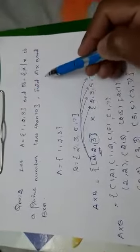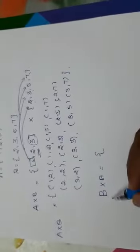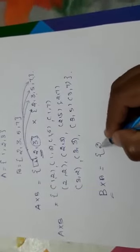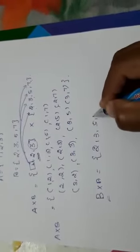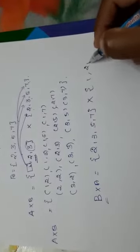You have been asked to find out A cross B and B cross A. The same way you have to find out B cross A. So now you have to write the B element first. B is 2, 3, 5, 7 cross product A element is 1, 2, 3.